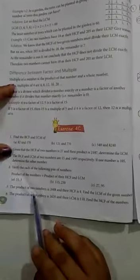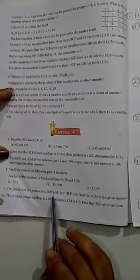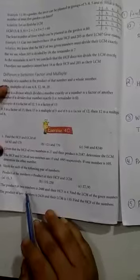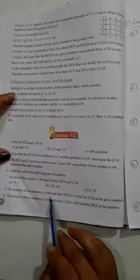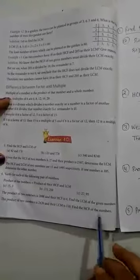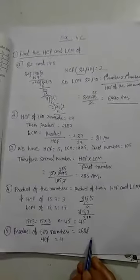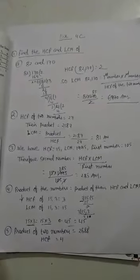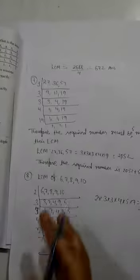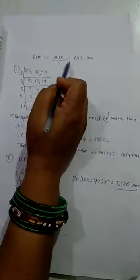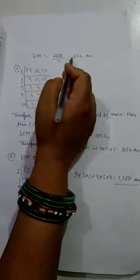Next question: the product of two numbers is 2688 and their HCF is 4, find the LCM of given numbers. Product of two numbers is 2688 and their HCF is 4. We have to find the LCM. LCM is equal to product of two numbers divided by HCF.